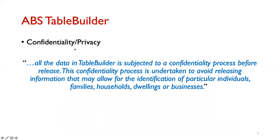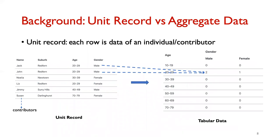The privacy provided by Table Builder is to ensure that the output does not lead to re-identification of individuals from the tables. To explain this, the raw data database can be imagined as a series of rows. Each row belongs to a contributor or an individual, and in aggregated form we only see counts of people belonging to certain attributes in tabular form.